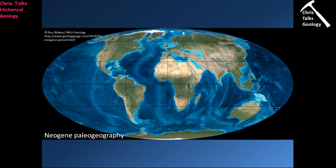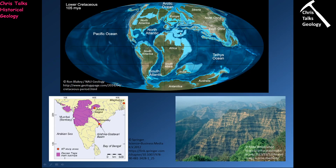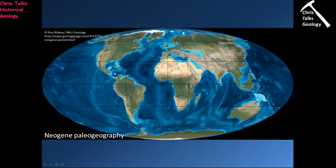By the Neogene, global sea levels look far more like they do today. Comparing the Cretaceous map to the Neogene: North Africa is exposed, Europe is fully above water, North America is no longer bisected by large inland seas, most of northern South America is exposed, and Southeast Asia is mostly above sea level again. We also see the appearance of ice caps at each pole, locking up ocean water as ice and lowering global sea levels.